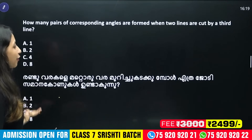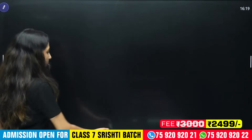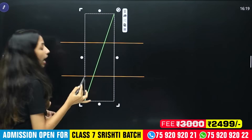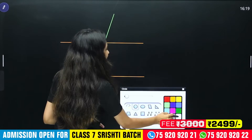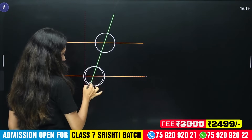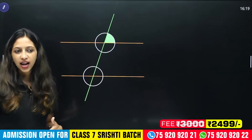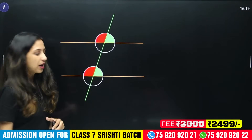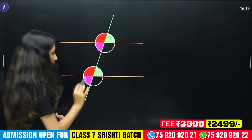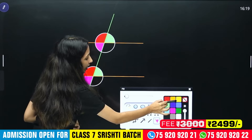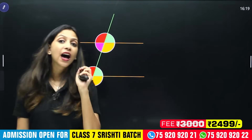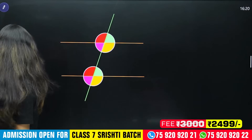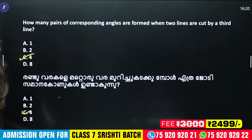How many pairs of corresponding angles are formed when two parallel lines are cut by a third line? Two parallel lines are cut by a transversal. At each intersection we can count corresponding angle pairs — one pair, then another, then a third, and a fourth. So we get 4 pairs of corresponding angles in total.